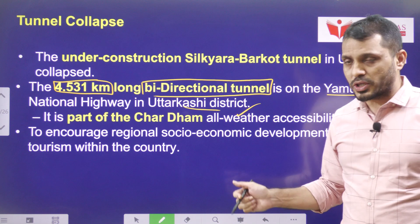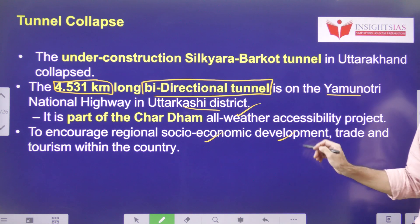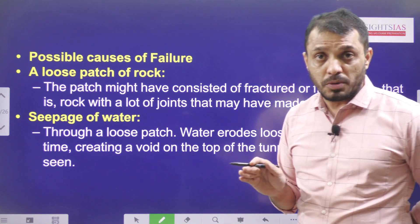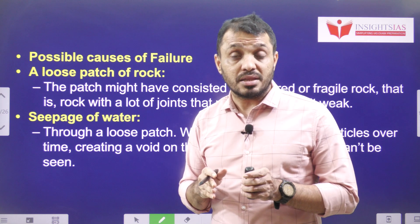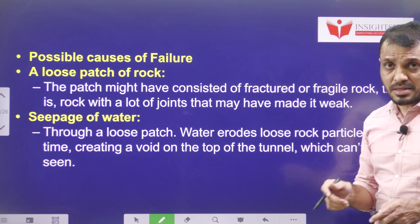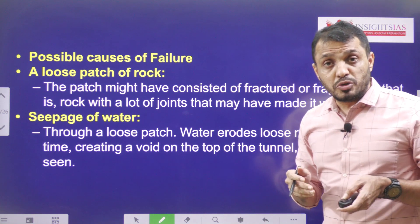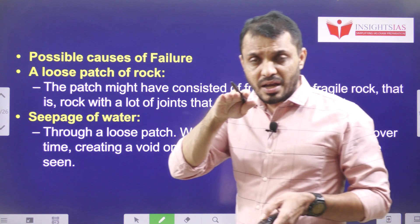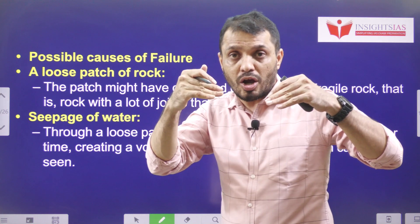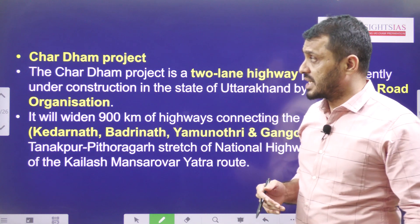The Chardam project's main purpose is to encourage regional connectivity so that the socio-economic development of the region will be improved. Chardam includes Badrinath, Kedarnath, Gangotri, and Yamunotri — these are the four places. Possible causes of the tunnel failure may be due to loose patches of rock, where water seeps in and causes the rock to collapse, leading to the collapse of the tunnel.